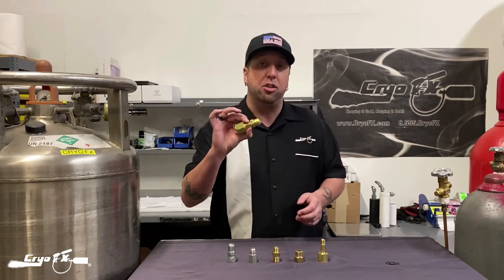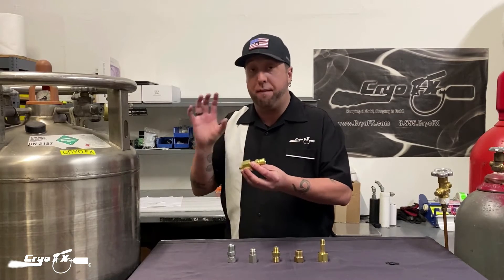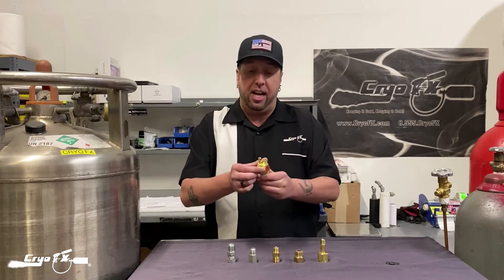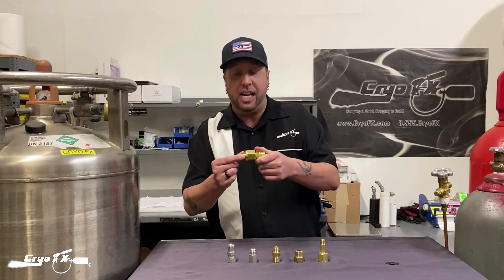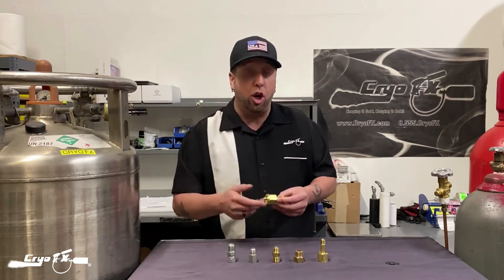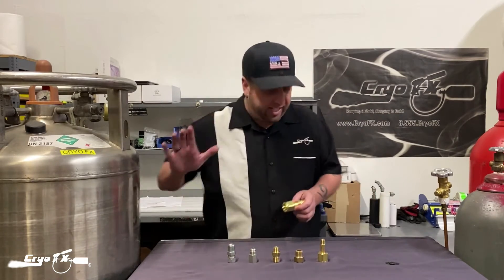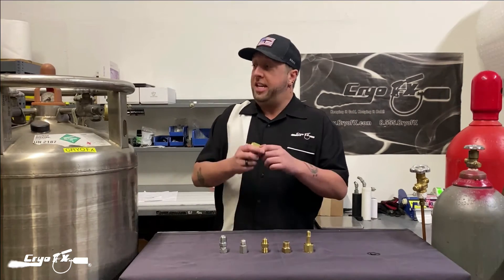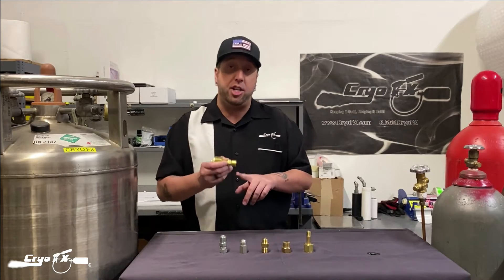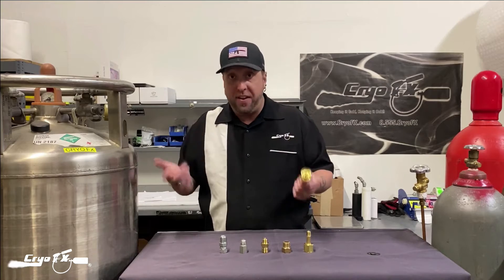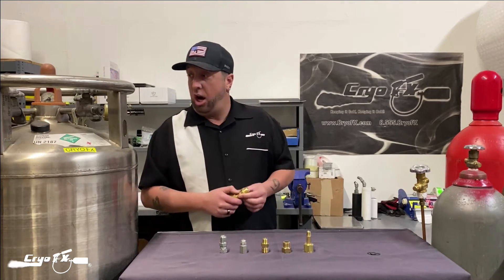You have a CO2 cylinder adapter that's going to be converting that CGA 622 fitting over to a CGA 320 — that's what this adapter does. You can tell it has a pin that goes inside, a male part, and this is actually a female fitting. I'll show you that more in depth when I bring the camera up close. This adapter goes on the liquid port and converts it to a CGA 320, which is the most common CO2 fitting used in the United States.